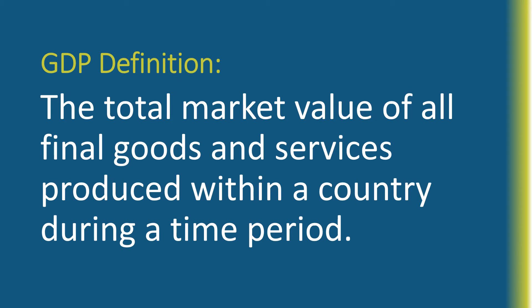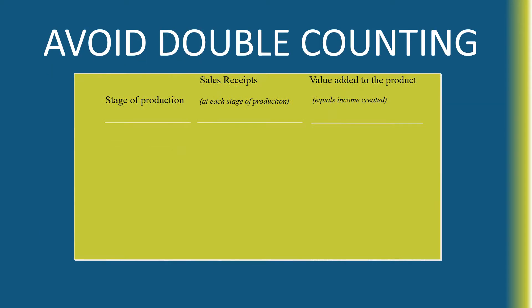If we think about GDP's definition — the total market value of all final goods and services produced within a country during a time period — we have to make sure that we avoid one serious problem: the problem of double counting. To think about this, we can think about a grocery store selling some bread.